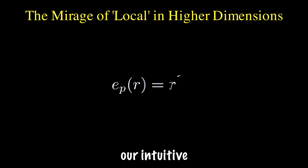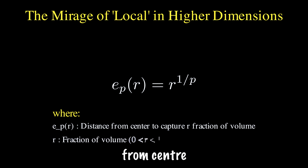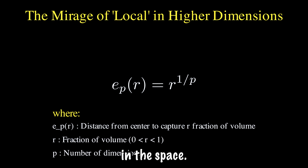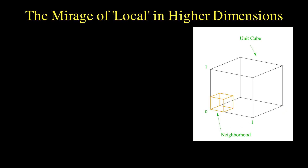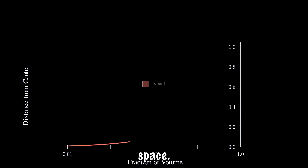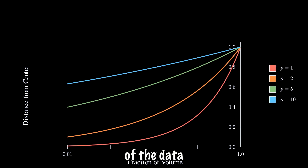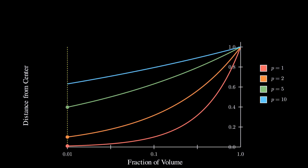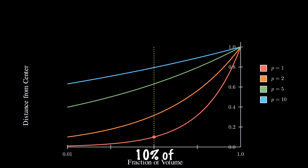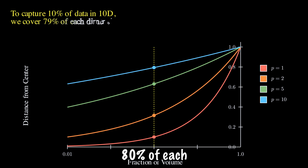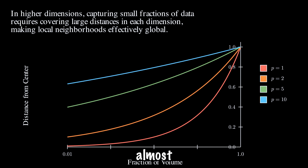The mirage of local in higher dimensions. In higher dimensions, our intuitive sense of local becomes distorted. Look at this formula — it shows the distance from the center needed to capture a fraction of volume in the space. R is the fraction of volume and P is the number of dimensions. In a 10-dimensional space, to capture just 1% of the data using KNN, you need to include about 63% of each dimension's range. To capture 10% of the data, you need 80% of each dimension. What was once a small neighborhood now spans almost the entire space.